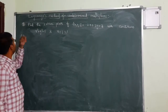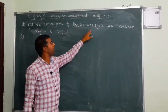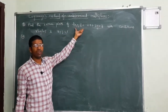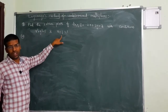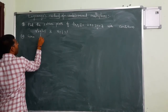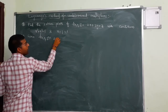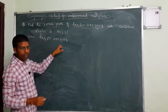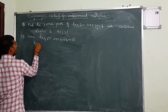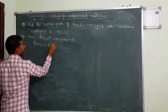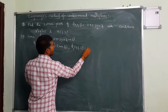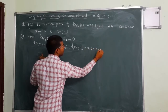Last problem of this method: find the extreme points of the function f with conditions x squared plus y squared equals 5 and x plus z equals 1. Given f of x, y, z equals 2x plus 3y plus z — equation 1. The condition phi 1 of x, y, z equals x squared plus y squared minus 5 — equation 2. And phi 2 of x, y, z equals x plus z minus 1 equals 0 — equation 3.